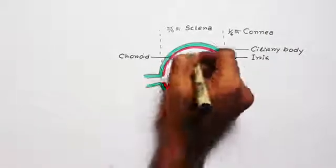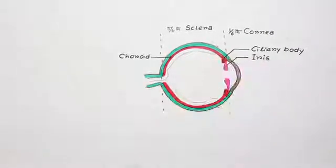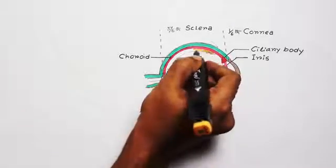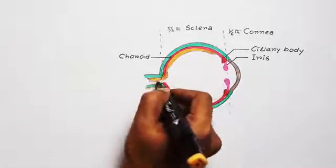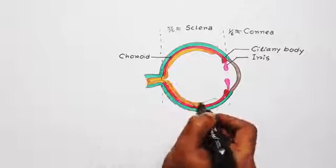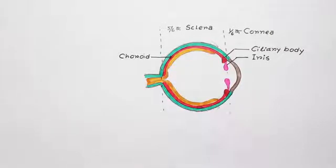Now, the most important part is the inner layer. Only this layer can convert electromagnetic energy into electrochemical signals. This layer is called retina.